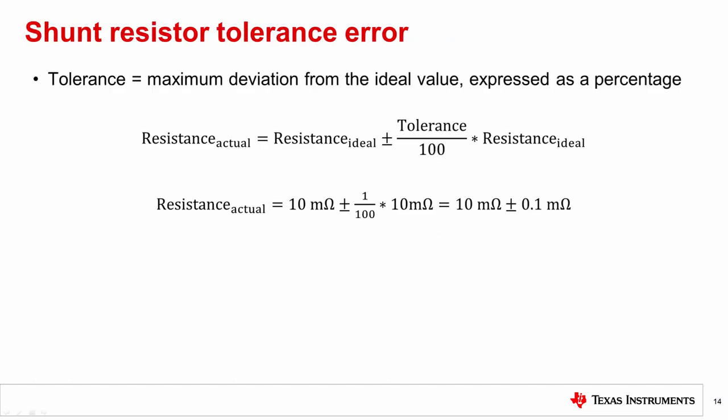So far, we have discussed the sensing amplifier offset error and how it contributes to the overall accuracy of the system. Shunt resistors are not ideal either, and their non-idealities have a significant impact on system accuracy as well. Among the shunt resistor non-idealities, its tolerance is a significant source of error. It is expressed as a percentage and defined as the maximum deviation from the ideal resistance value.